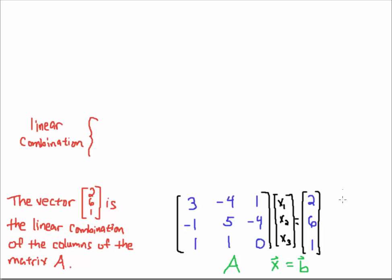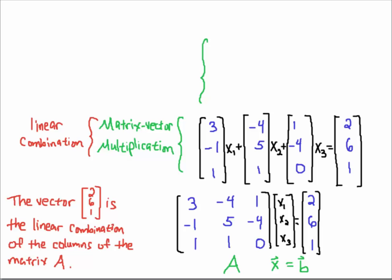The vector 2, 6, 1 here — I claim is a linear combination of the columns of this matrix. That means I'm taking the vector X1, X2, X3 and taking the component X1 and multiplying it by the first column, then adding X2 times the second column plus X3 times the third column. When you take a scalar like X1 multiplied by the first column, X2 times the second column, plus X3 times the third column, that operation is called a linear combination — and it is actually just matrix-vector multiplication.